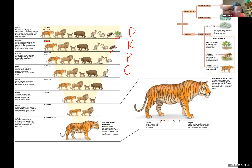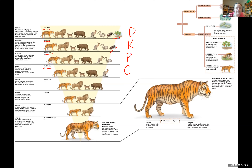After phylum, we have class. The class we're focusing on in this example is class Mammalia. Mammals have hair or fur, mammary glands, and the vast majority are born rather than hatched. So who did we lose? We lost our snake — no hair, no mammary glands, they're egg layers. See how the group is getting more and more specific as we go? Less and less inclusive, including fewer and fewer organisms.